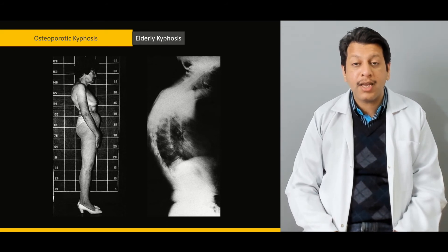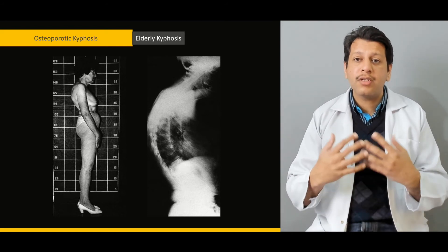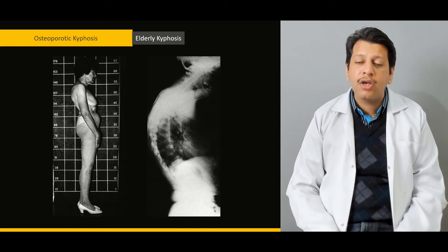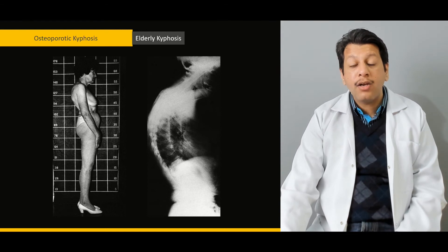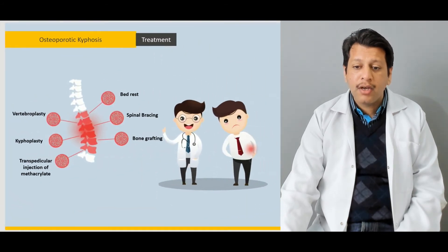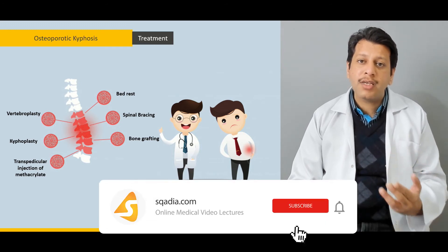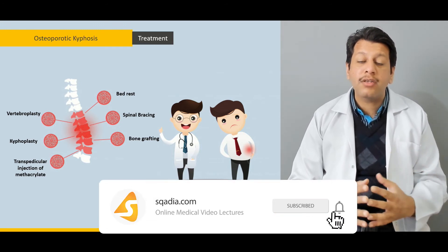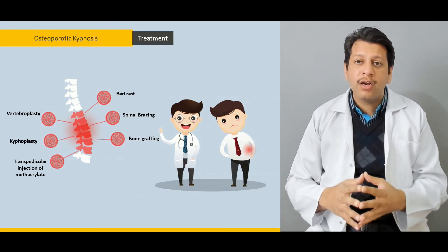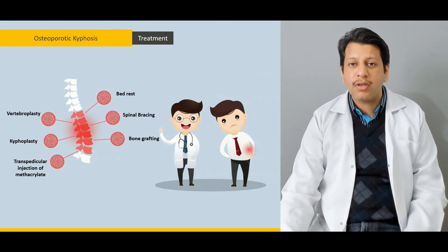Then we move on to one of the more common presentations in the elderly age group — that is osteoporotic kyphosis — covering its pathophysiology and how it leads to hyperkyphosis of the thoracic spine. We will discuss how to manage it, from bed rest, NSAIDs, and physiotherapy all the way to vertebroplasty, kyphoplasty, and transpedicular injection of methyl methacrylate — all modalities available to treat vertebral kyphosis seen in elderly osteoporotic females.